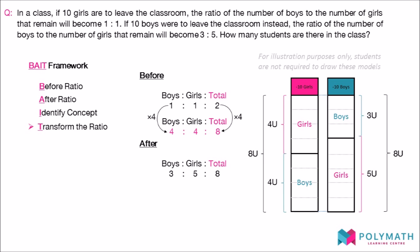When we transform the ratios according to the unchanged quantity, we make the ratios comparable to each other. Now we solve the question by seeing how the transformed ratios have changed from the before ratio to the after ratio.